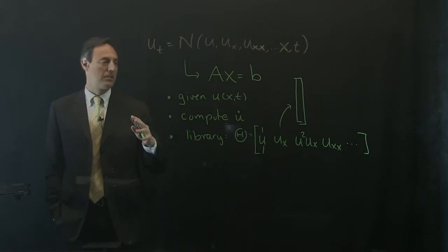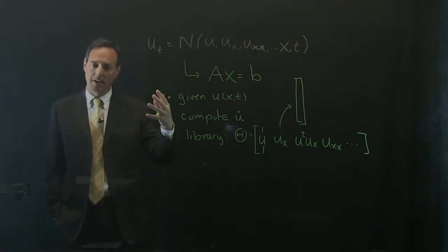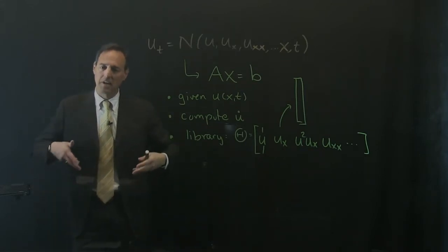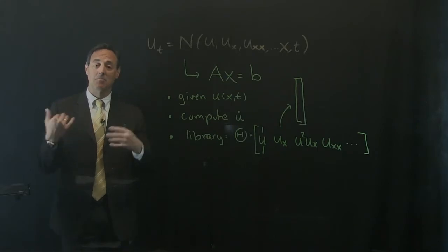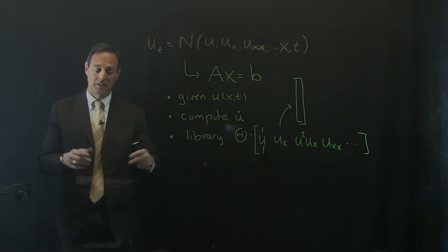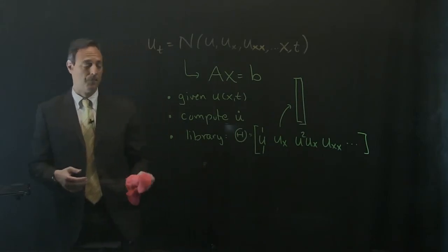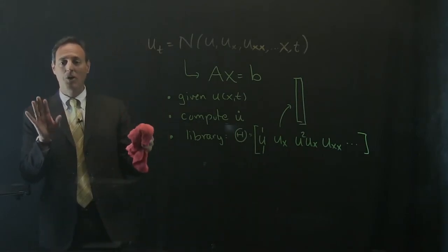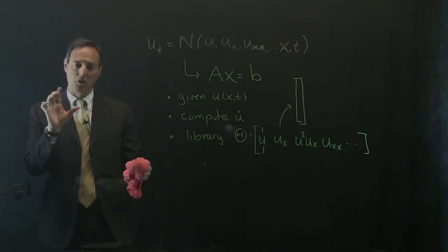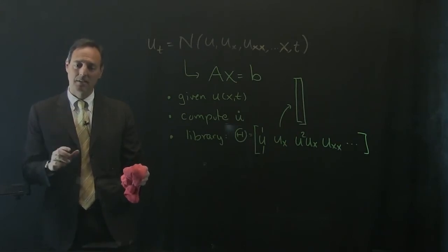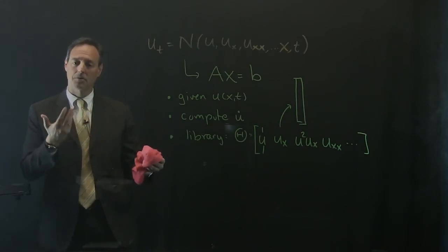To illustrate this, we'll solve Burgers' equation, evolve it forward, then give you the data and ask: could you have discovered that it was Burgers' that produced it? That's the goal for the rest of the lecture. All we're doing is solving Ax = b — get the solution that promotes sparsity.